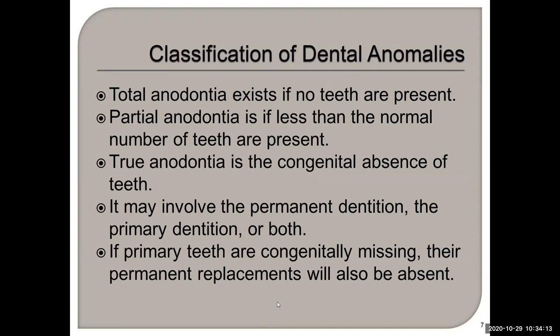True anodontia is a congenital absence of teeth. It may involve the permanent dentition, the primary dentition, or both. The key takeaway: if primary teeth are congenitally missing, their permanent replacements will also be absent. Know the difference between partial anodontia and true anodontia.